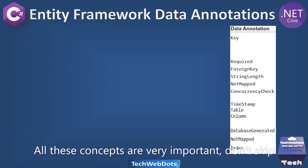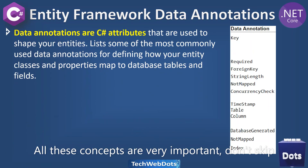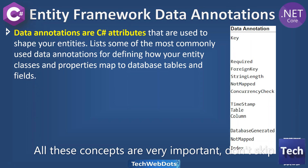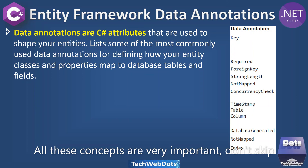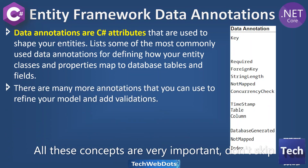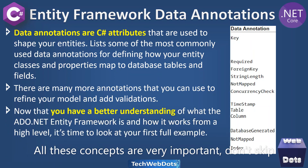In the next part we'll discuss data annotations, which are very important when working with code first, APIs, or any type of .NET Core application. Data annotations are C# attributes used to shape your entities and define how entity classes and properties map to database tables and fields. Commonly used data annotations include: Key, Required, ForeignKey, StringLength, NotMapped, ConcurrencyCheck, Timestamp, Table, Column, DatabaseGenerated, and Index. There are many more annotations you can use to refine your model and add validation.